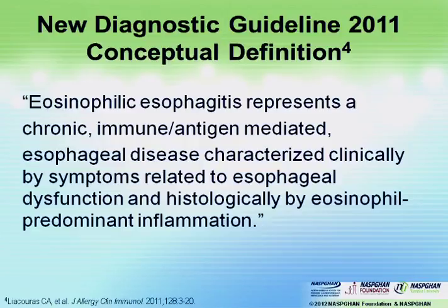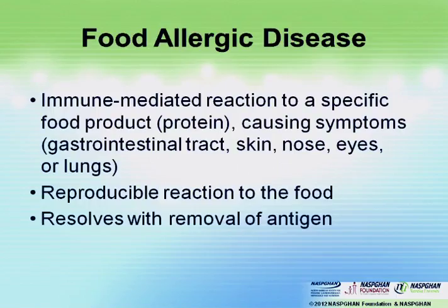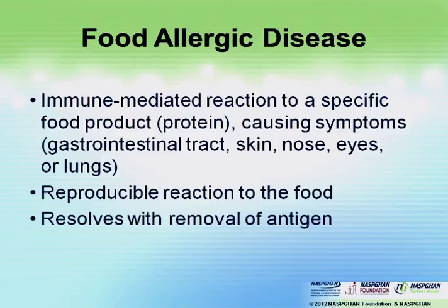EOE represents a chronic, immune, antigen-mediated esophageal disease characterized clinically by symptoms related to esophageal dysfunction and histologically by eosinophil-predominant inflammation. We think some chronicity may be due to chronic ingestion of allergenic foods sparking the inflammatory response. When foods are removed, many patients get better. There are likely subtypes — probably the bulk have some food allergen involved, but some may be non-allergenic, some steroid-responsive, some not.